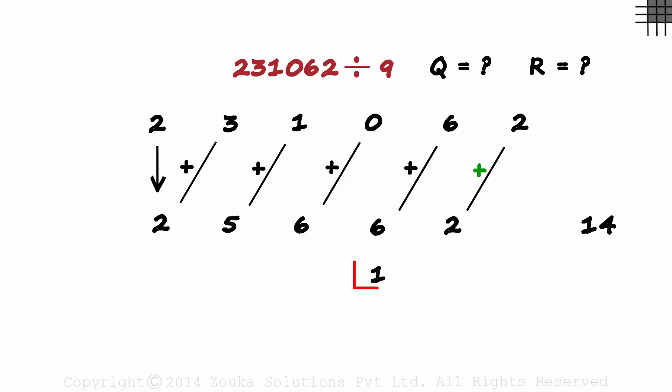Interesting! As 1 is written under the 6, we add them. 2 is written down. 6 plus 1 is 7, 6, 5 and 2.